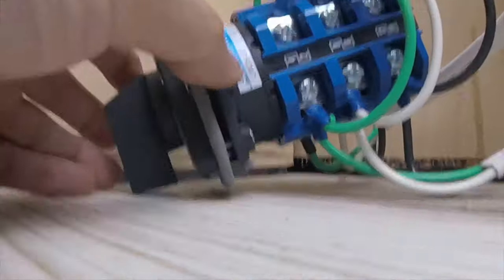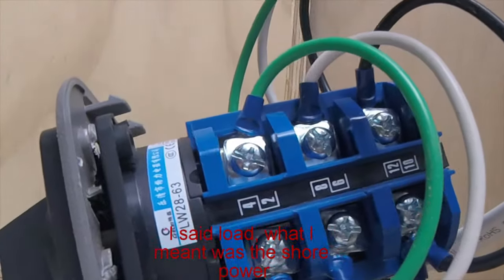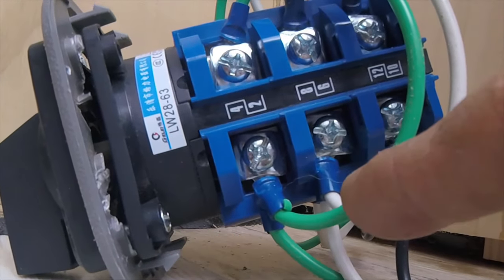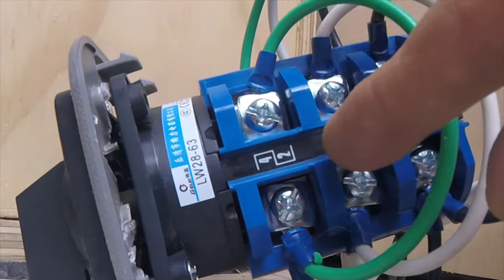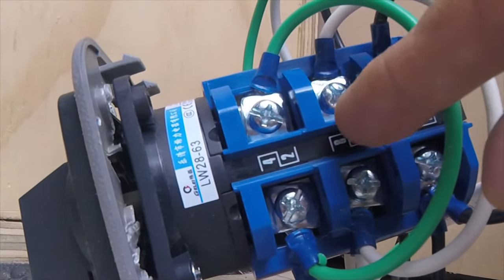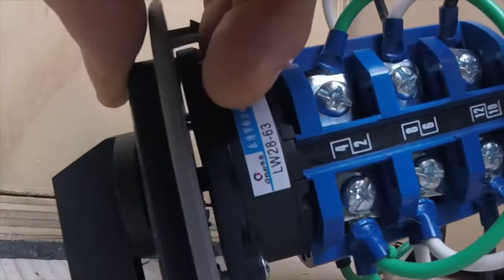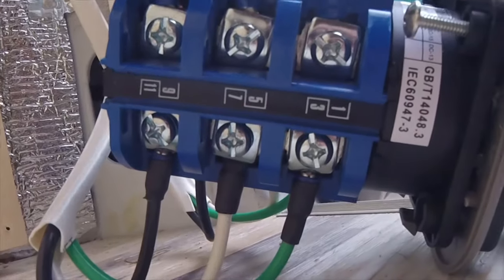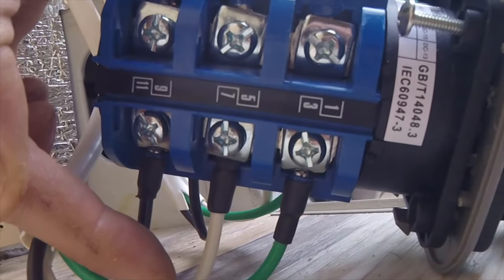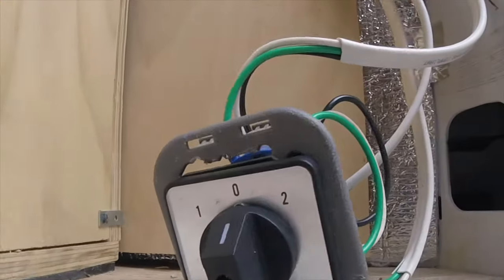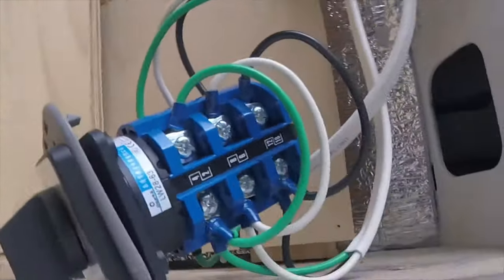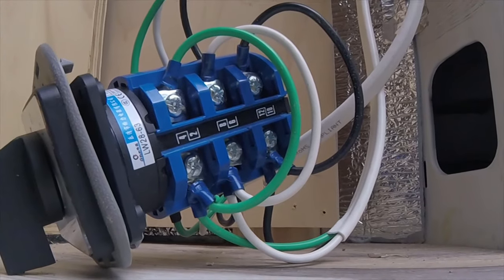And here you can see on this side, I came in with the load. This is the shore power comes in. You have hot, neutral, and green. I looped it over to the other side so both terminals are hot no matter where the switch is. And then when you flip the switch, if you're on one, your AC is powered. And if you're on two, your battery charger is powered. So let's go through the breakdown of this and we'll test it and we'll see how it works.